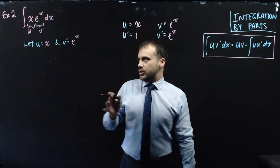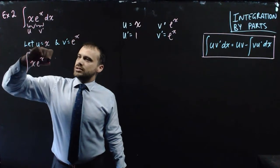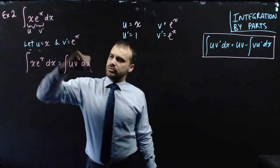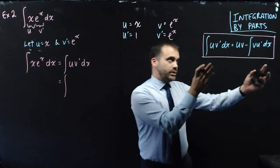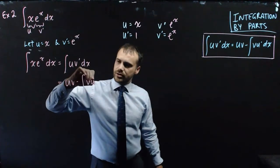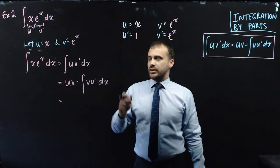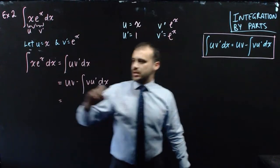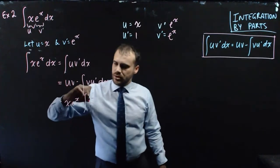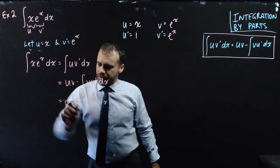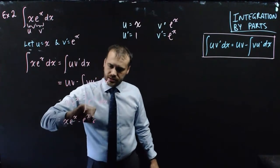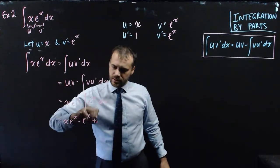The integral of x eˣ with respect to x equals the integral of uv' with respect to x, and using our integration by parts formula that's equal to uv minus the integral of vu' with respect to x. Substituting in: uv is x eˣ, minus the integral of v times u' — that's eˣ times 1, so eˣ — with respect to x. The integral of eˣ is eˣ, so we get x eˣ minus eˣ plus c.